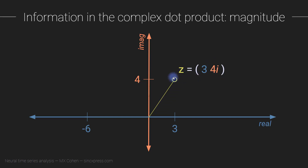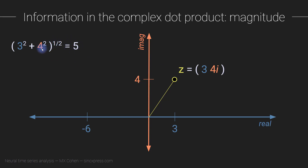If we want to extract the length of this line — the distance of the complex dot product away from the origin — we use the Pythagorean theorem, treating this line as the hypotenuse of a right triangle. We compute the real part squared plus the imaginary part squared, then take the square root. That gives us five. Be mindful that you're squaring the imaginary part, not the imaginary number — so not 4i squared, but just 4 squared.